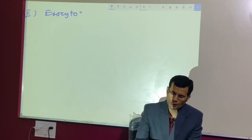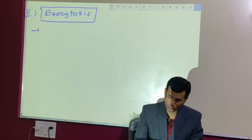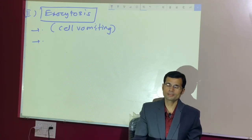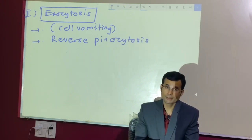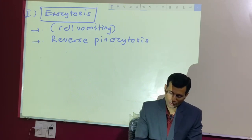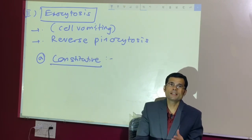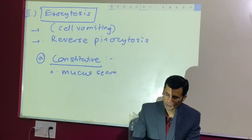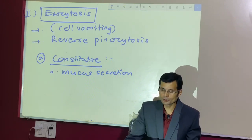The other type of transport across the membrane is exocytosis, when substances are thrown out of the cells. It is also called cell vomiting. When liquids are thrown out, it is sometimes called reverse pinocytosis. There are two types: the first is constitutive exocytosis, which occurs continuously with no receptor or signal needed. Example: mucus secretion — mucus-secreting goblet cells in the small intestine secrete mucus continuously by constitutive exocytosis.